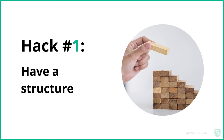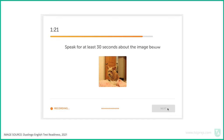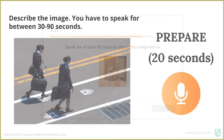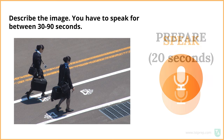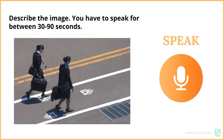Hack number one for the speak about the photo question on the Duolingo English test is to have a structure. The question requires you to speak for at least 30 seconds, with 20 seconds to prepare. You have to speak for between 30 to 90 seconds, and this is hard to do. One of the best ways to speak for a longer amount of time is to have a structure.